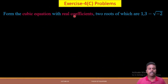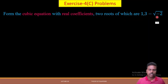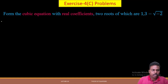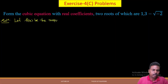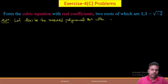Let us discuss a problem. Form the cubic equation with real coefficients, two roots of which are 1 and 3 − √(−2). Let f(x) be the required polynomial equation with real coefficients.